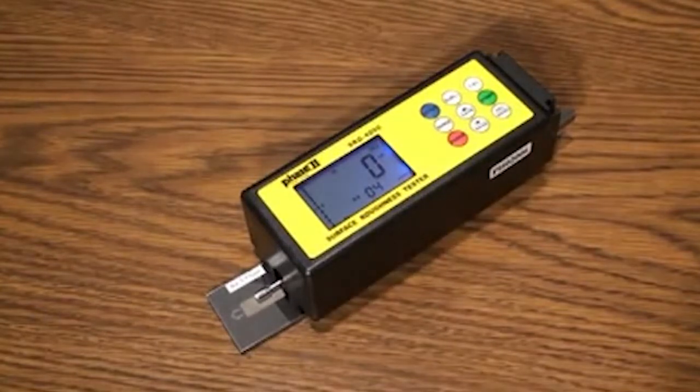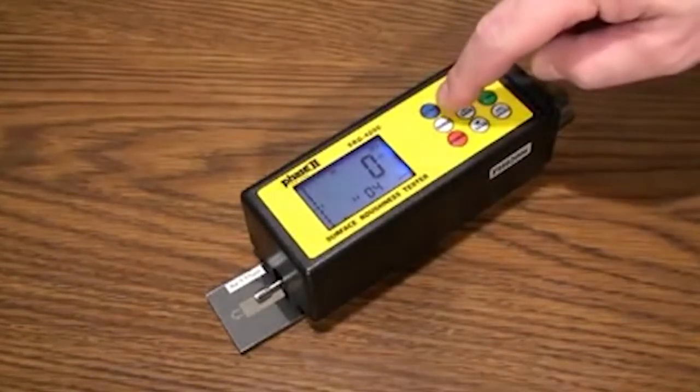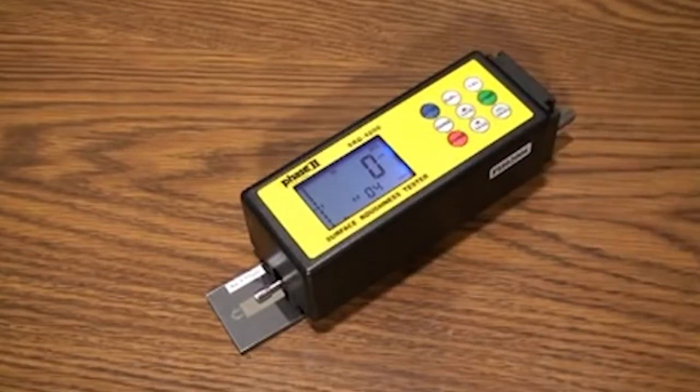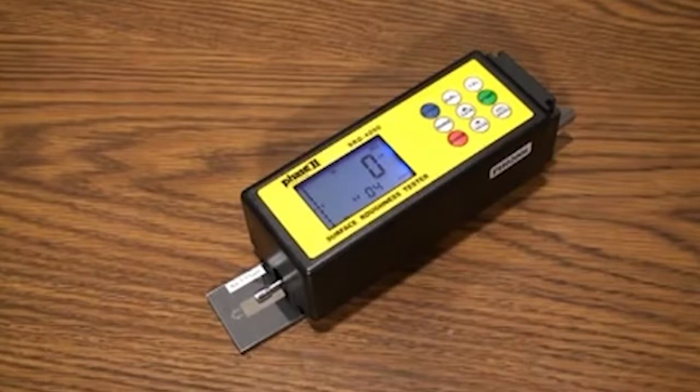The cutoff button. The cutoff length is the sampling length of the test. The correct value is determined by approximate surface roughness. This can be referenced in a chart in the operation manual showing various ranges.